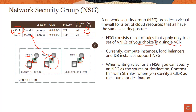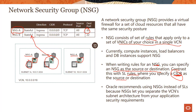There is another key difference between NSG and security list: when writing rules for an NSG, you can specify another NSG as the source or destination. Contrast this with security list rules where you can only specify a CIDR. In the case of NSG, specifying another NSG as the source or destination makes life easier and supports more complex scenarios. Our recommendation is to use network security groups because they allow you to separate the VCN subnet architecture from your application security requirements.